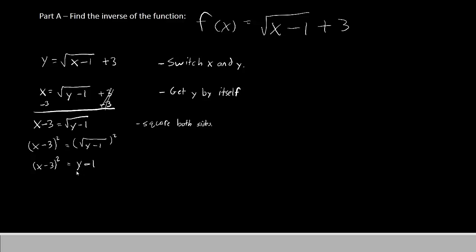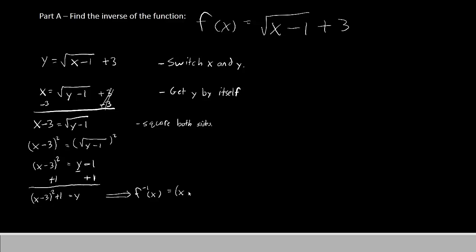Now there's only one more thing we have to move. The y is where it should be, but there's a minus 1 attached to it. So let's add 1 to both sides. On the left we have (x minus 3) squared plus 1, and on the right we simply have y. So our answer is f inverse of x equals (x minus 3) squared plus 1.